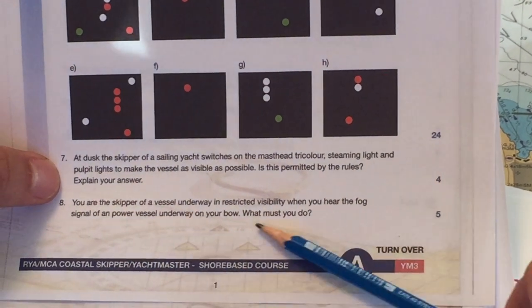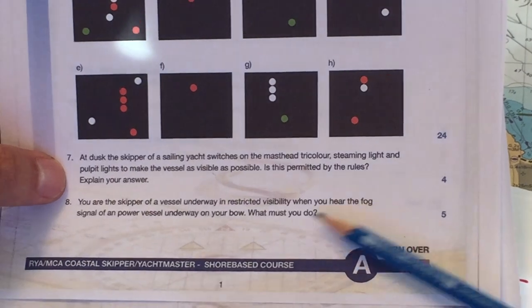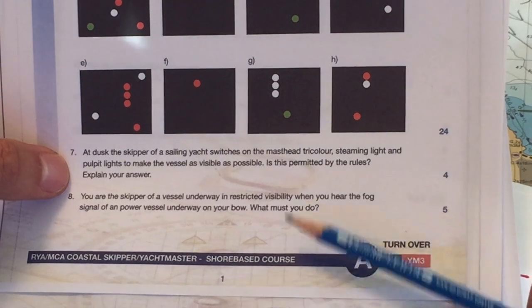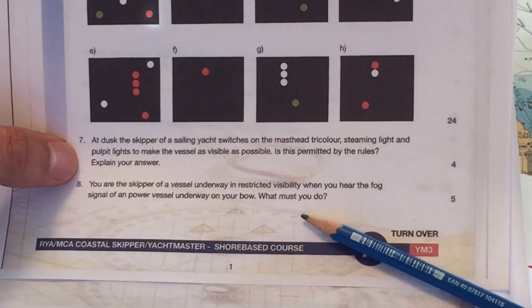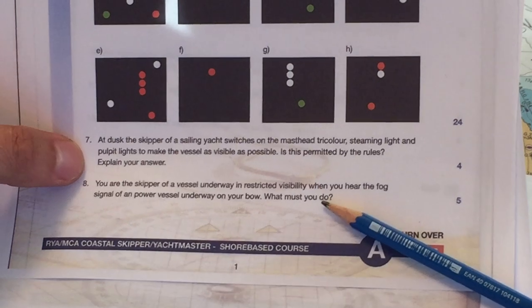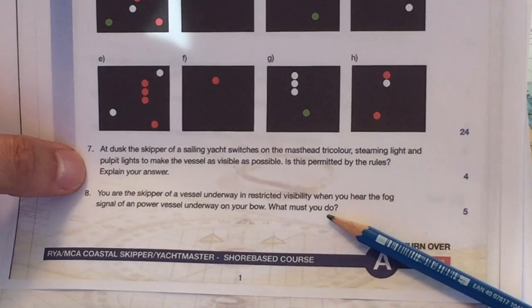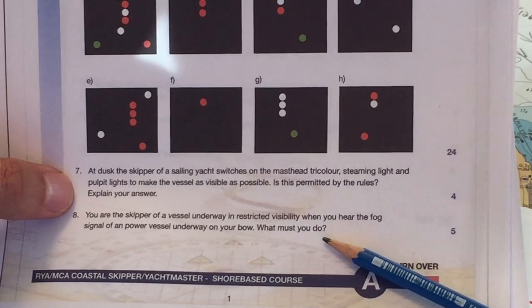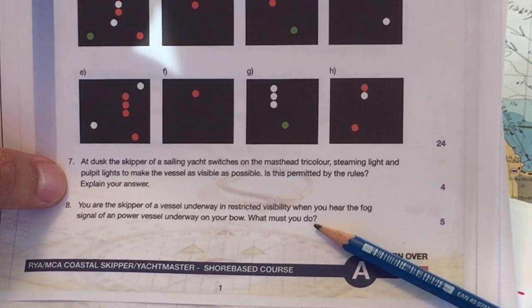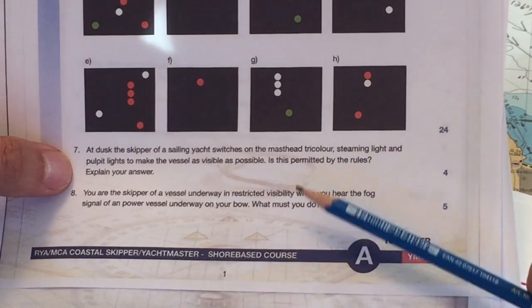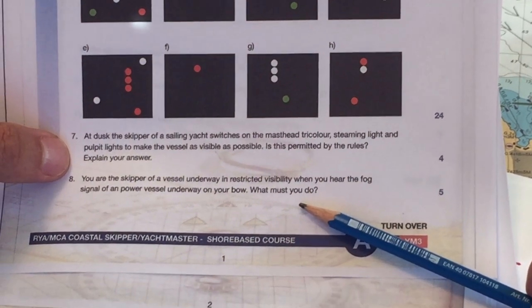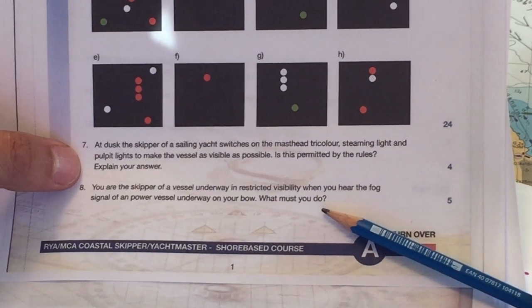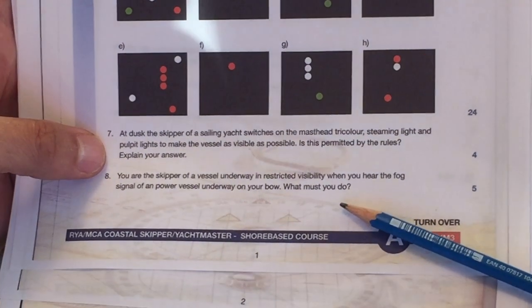You are the skipper of a vessel underway in restricted visibility. When you hear the fog signal of a power vessel underway on your bow, what must you do? Slow down immediately, but if you're in fog, you should be to bare steerage anyway. Slow down immediately to make sure that any risk of collision passes. In the meantime, of course, you can be, you'll be giving off your own warning signals, and that will depend on the vessel you're on, and also, of course, if you have radar, you're going to be monitoring your radar very closely.